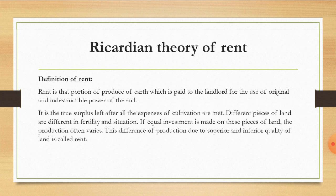اب دیکھیے، چار فیکٹر ہیں: land، labor، capital، organization۔ ان چاروں فیکٹر میں پہلا فیکٹر ہے land۔ Land کا معاوضہ یعنی rent کس طرح سے طے ہوتا ہے؟ یہ اس تھیری میں David Ricardo نے بیان کیا ہے۔ یعنی rent کیا ہے؟ Rent is that portion of produce of earth۔